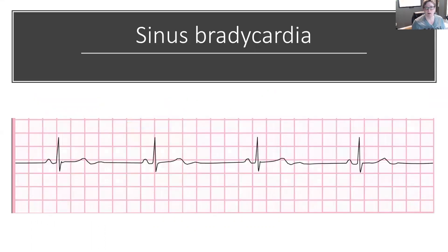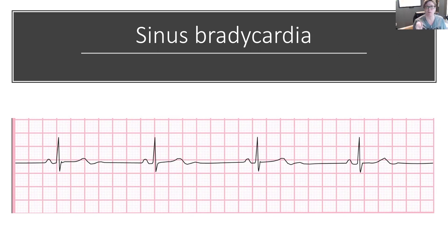Sinus bradycardia can occur naturally. In our seasoned athletes, they have a lower resting heart rate. When we sleep, we can also have a lower resting heart rate. So this is not always a rhythm that creates a lot of concern. We're looking for stable versus unstable, so let's look at a few things that would cause our patient to be unstable.